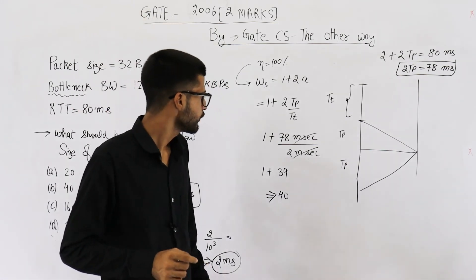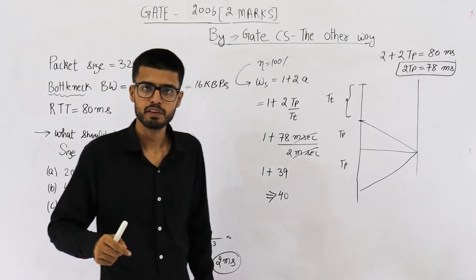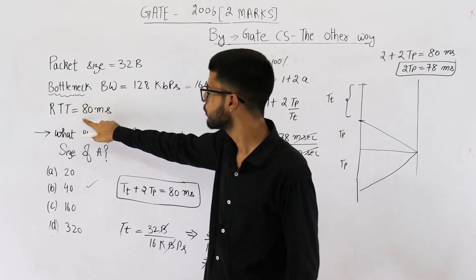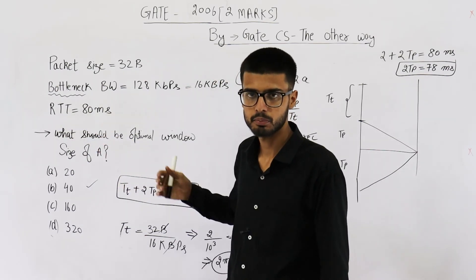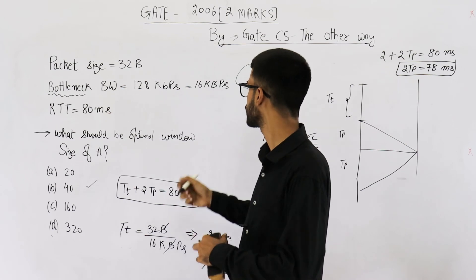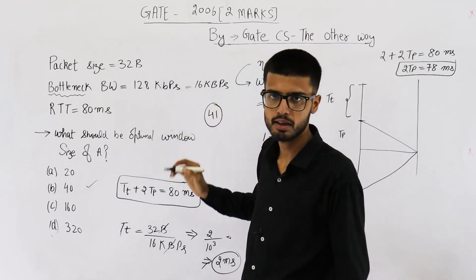Yeah, one more thing. If you just take the other definition, that means if you assume RTT means twice the propagation delay, then you are going to get 41 as the answer. That is incorrect.